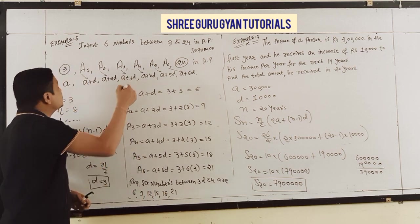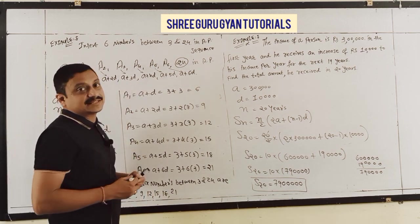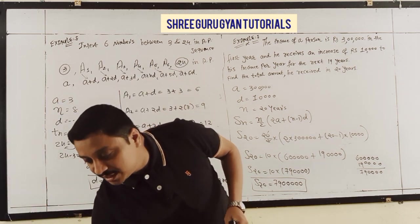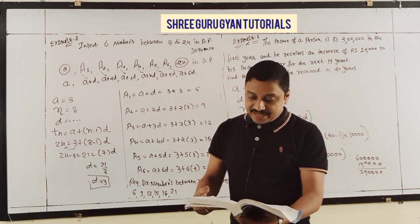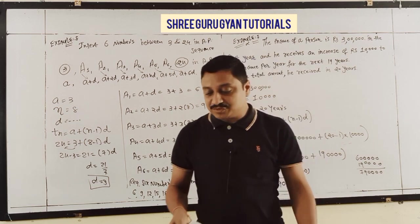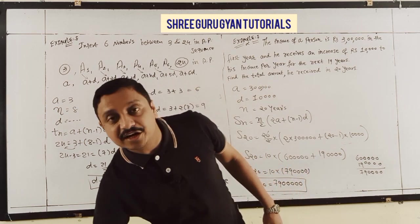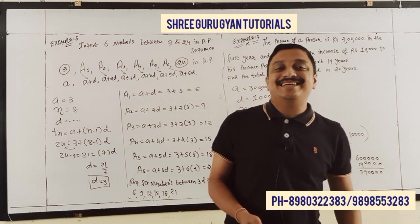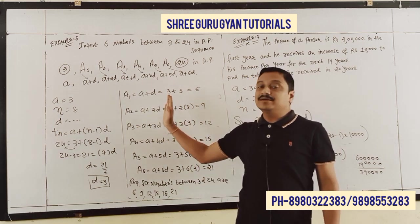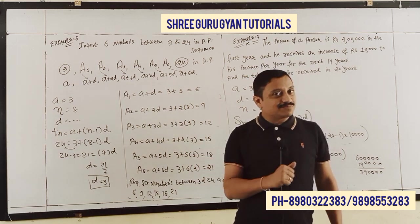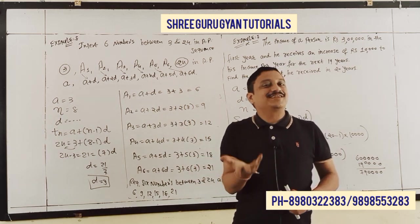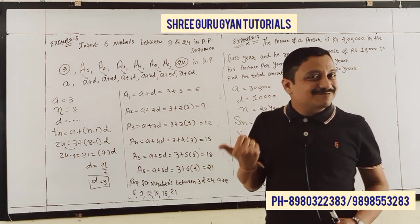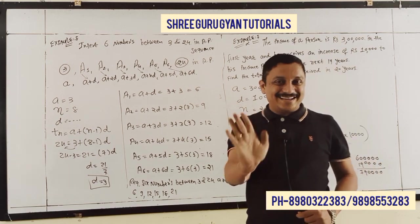The required 6 numbers between 3 and 24 are 6, 9, 12, 15, 18, 21. Example 8 is done. We stop this part here and continue further in Exercise 9.2 in the next part. Bye-bye, thank you.